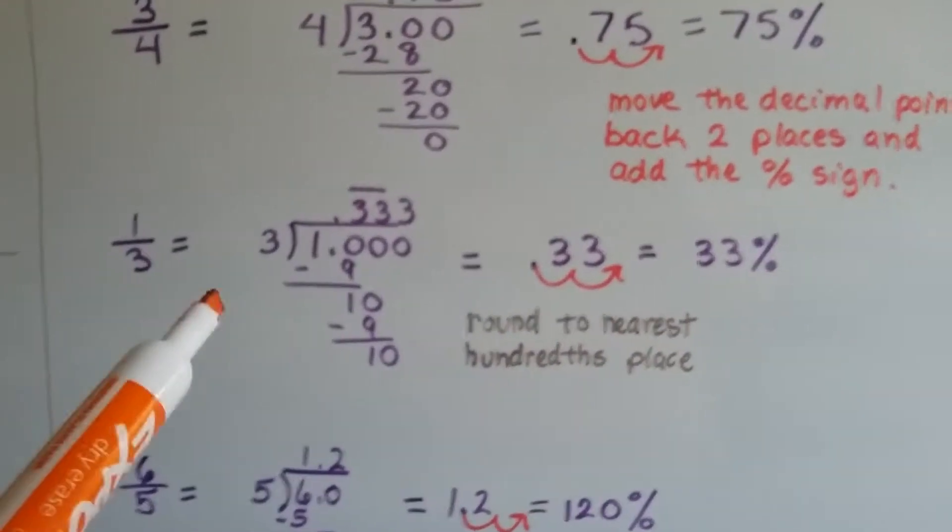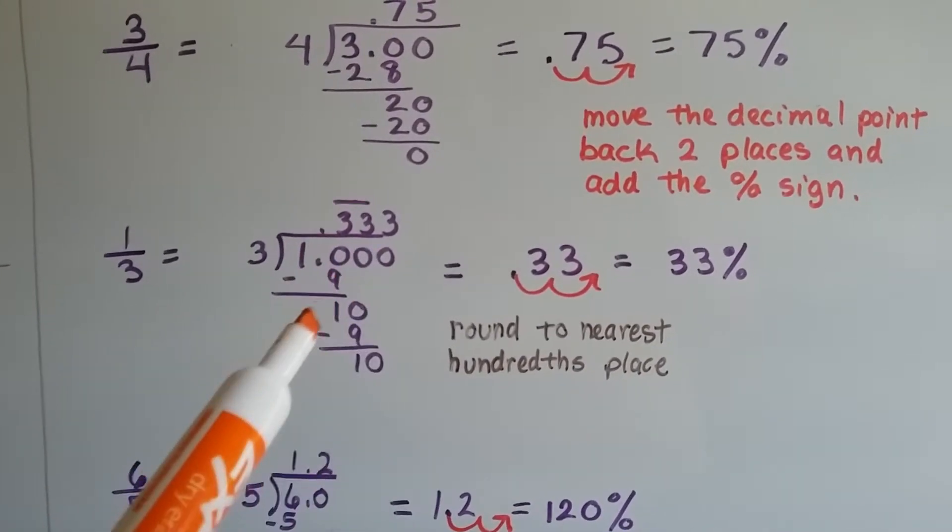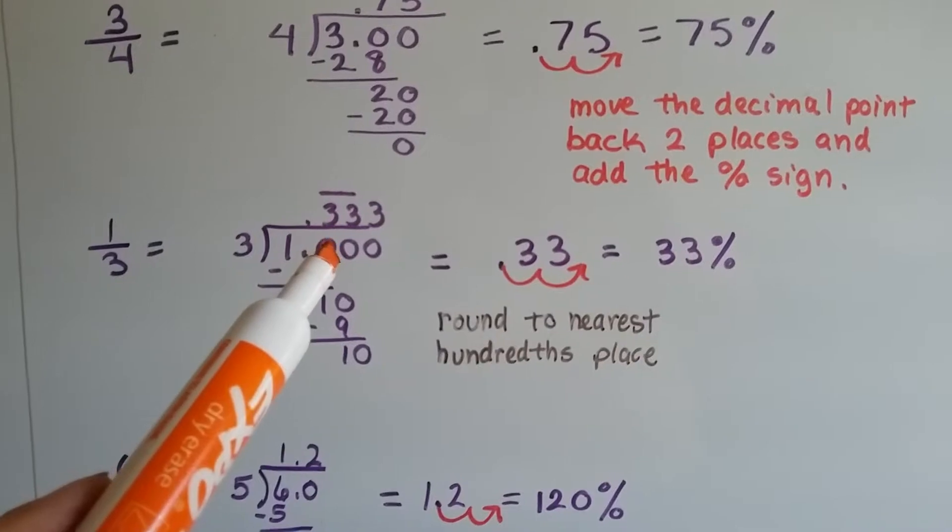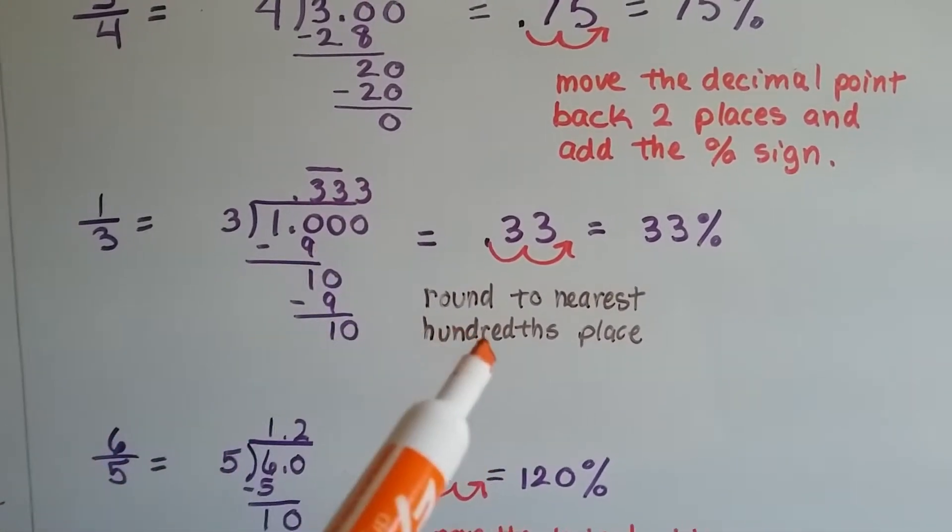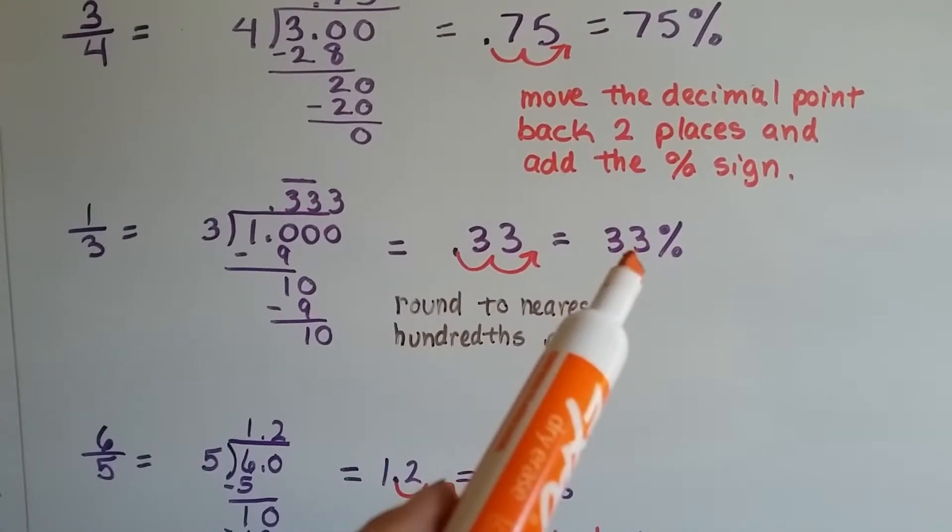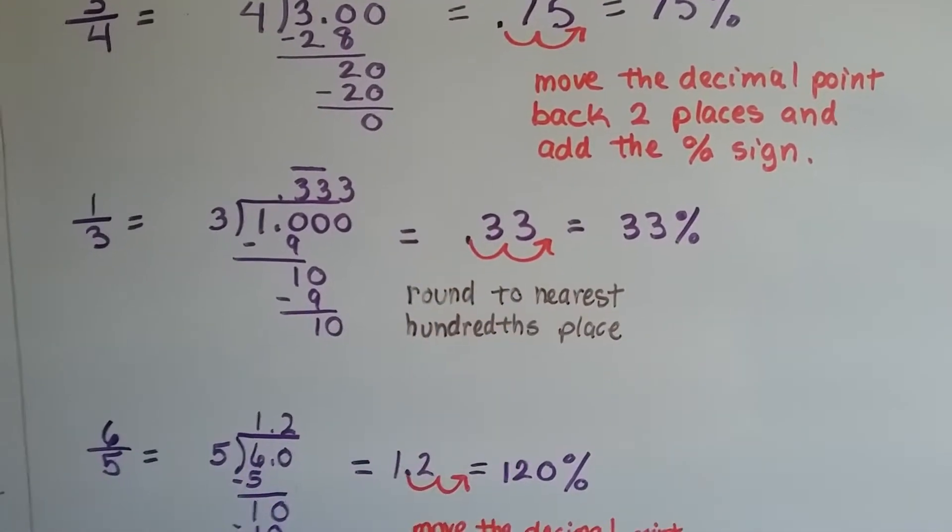For one-third, how many times can three fit into a one? We have to add the decimal point and the zeros to help us do it. Three goes into ten three times, and we see that it keeps repeating with the three. So we round to the nearest hundredth place and just put the percentage sign. We move that decimal point back. It's 33%.